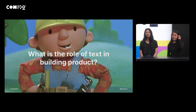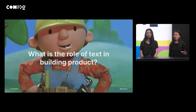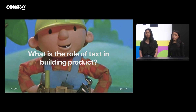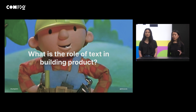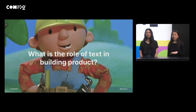Text or copy exists on the surfaces of all of the digital products we use in design. Whether it's CTAs or instruction messages or labels or error messages, the text in designs shapes how we use a product. However, because the text exists as a part of so many different places, whether it's the mock-ups or in development, we often forget to think about the role of text in product development. So the first question we wanted to dive into today is: what is the role of text in building product?